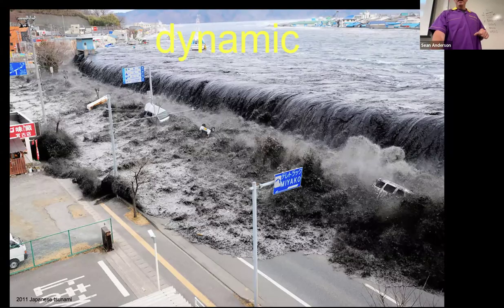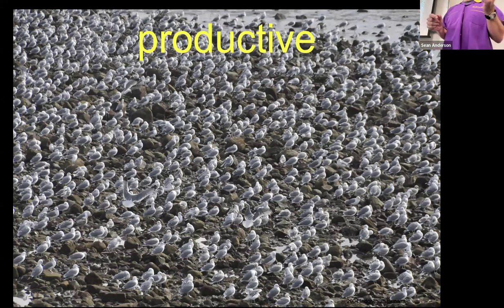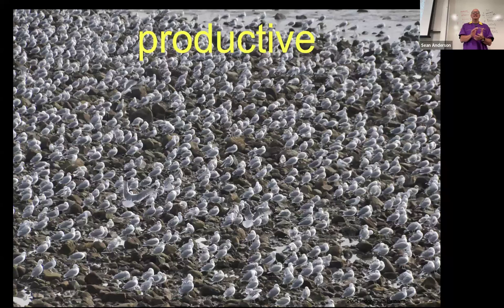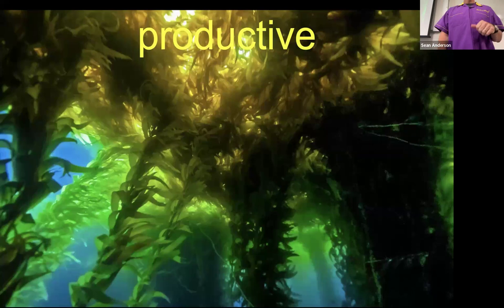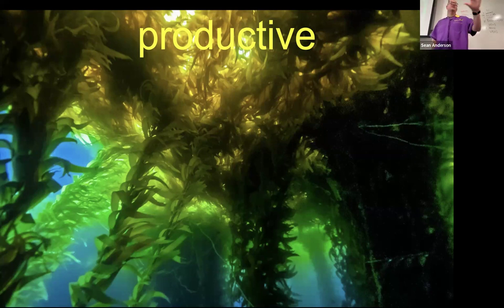Coastal zones are also highly productive — the most productive parts of our planet, measured in terms of carbon fixation or biomass accumulated per square meter. Here's one example: a gull colony. The second most productive biomass-accumulating thing on Earth is giant kelp — Macrocystis pyrifera — which dominates most of our reefs just next to our shoreline. This stuff is insanely productive.